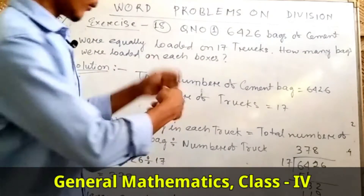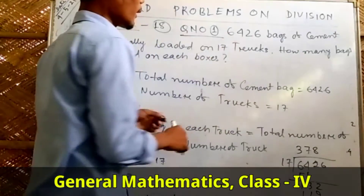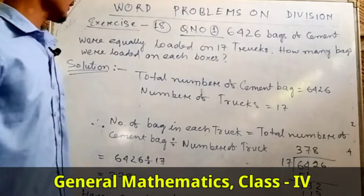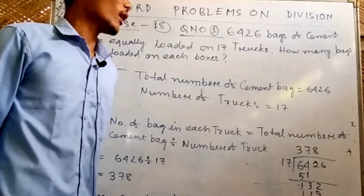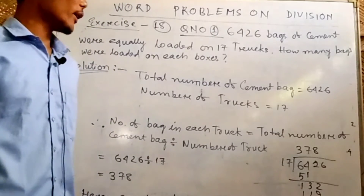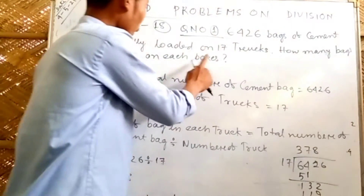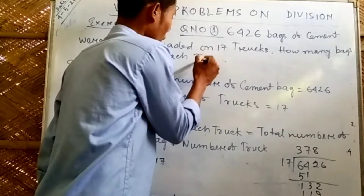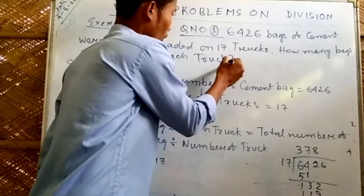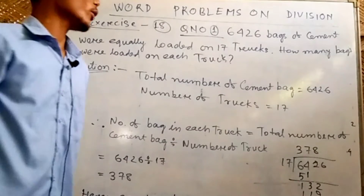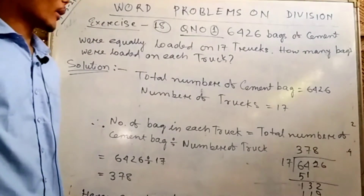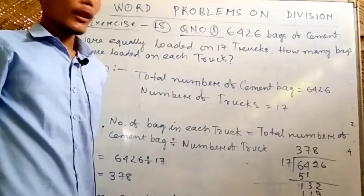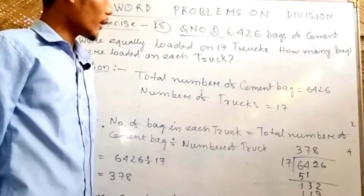Question number one: 6426 bags of cement were equally loaded on 17 trucks. How many bags were loaded on each truck? The total number of cement bags is 6426 and the number of trucks is 17.